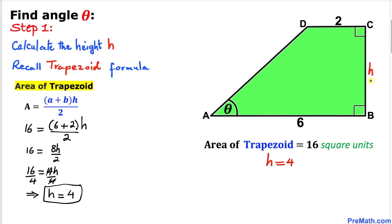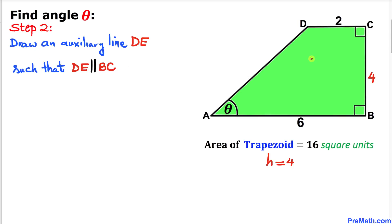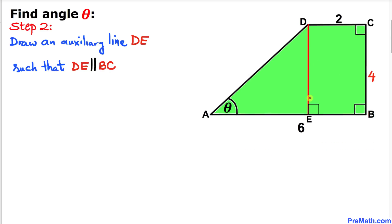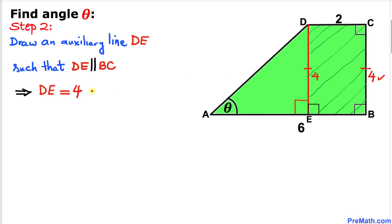Here's our next step: let's draw a line DE, where E is a point such that DE and BC are parallel to each other. Now focusing on rectangle BCDE — by the definition of a rectangle, opposite sides are equal. If side BC is 4, then DE must be 4 as well. And since side CD equals side BE, if CD is 2 units then BE is 2 units as well.